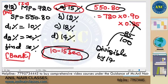Please remember here, 550.80. Prashant, don't do this mistake. This digital sum is 9.